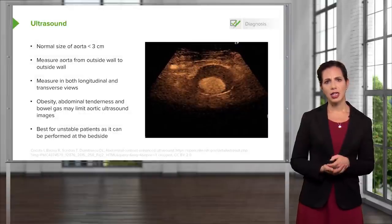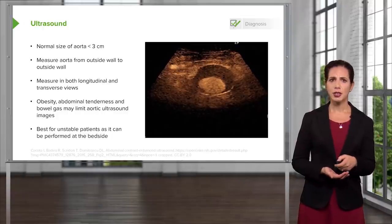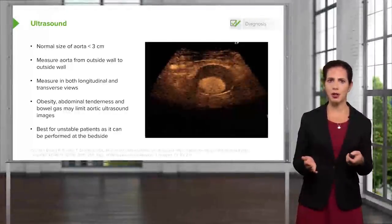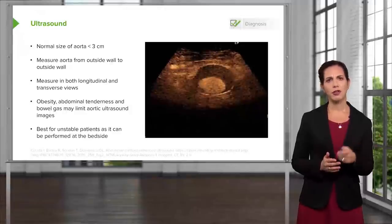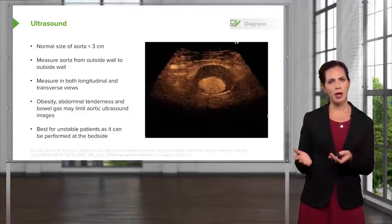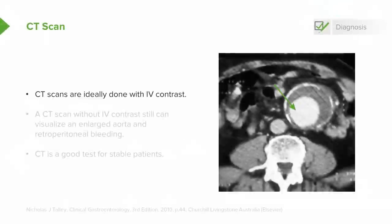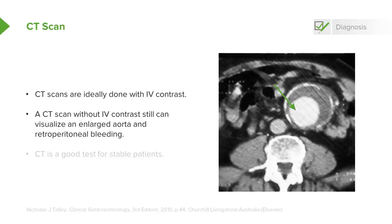Ultrasound is best for the unstable patient as it can be performed at the bedside. It's also performed readily by emergency medicine physicians and is a big part of our training, so sometimes you don't even have to wait for the ultrasound tech from radiology. CT scan, again ideally done with IV contrast — on the CT scan picture you can see the original aorta as the bright white area in the center, with the large grayish area surrounding it representing the aneurysm. A CT scan without IV contrast can still give you a look, but might not show active bleeding or give as good an anatomical picture.